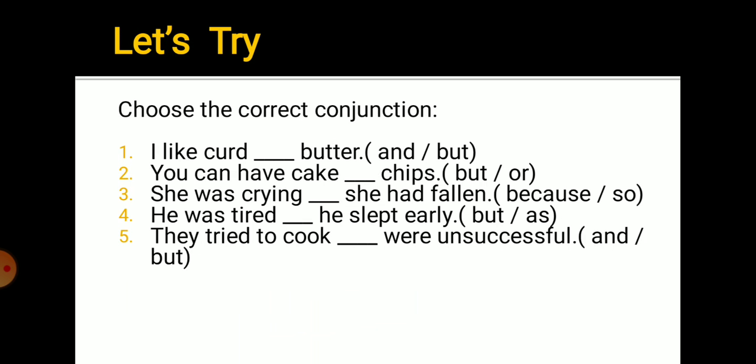Now let's try. Choose the correct conjunction. Conjunctions are given in the bracket, you have to choose the right one. I like curd dash butter - and or but. You can have cake dash chips - but or or. She was crying dash she had fallen - because or so. He was tired dash he slept early - but or as. They tried to cook dash were unsuccessful - and or but. Now read the sentence, try to understand what it's trying to say, and then choose the conjunction accordingly. You've already understood the basic idea of conjunctions and where to use what.